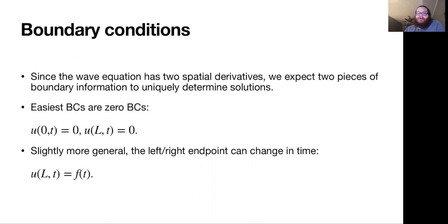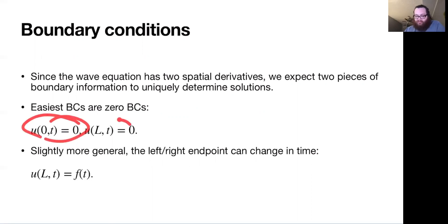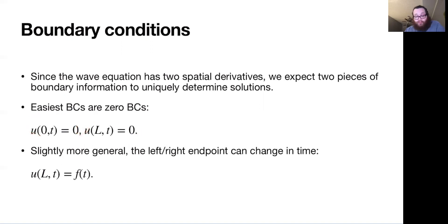Some of the easiest boundary conditions are zero boundary conditions. These look like the value of your function at the left and right endpoints being zero. We would interpret that as the string being tied or fixed at both ends.